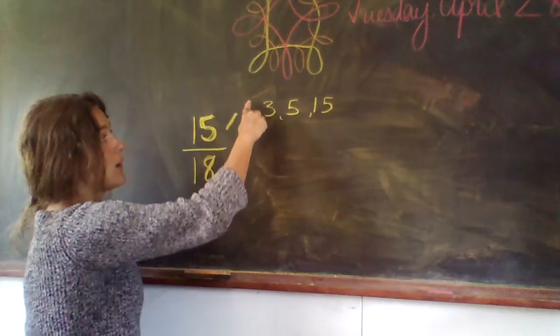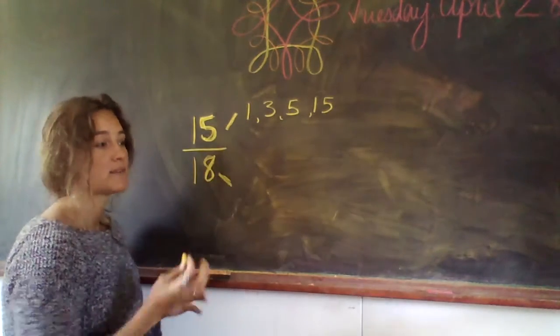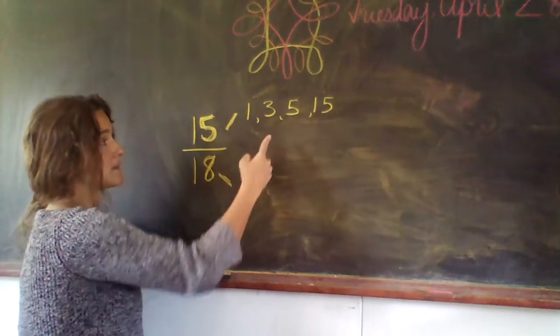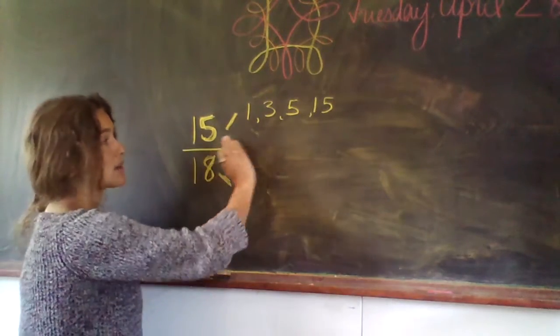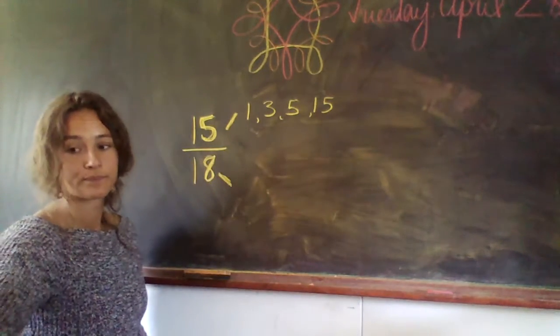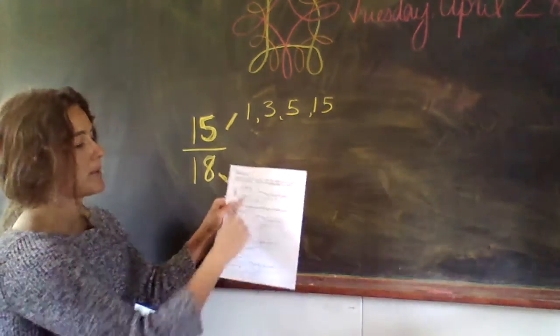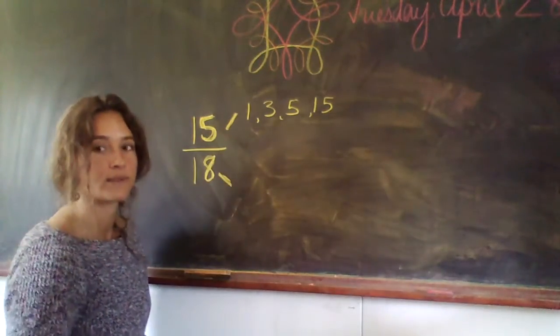Here's our rainbow. 1 times 15 is 15. 3 times 5 is 15. Those are all the factors, so that's this top bubble right here. I just haven't made the little bubble around it.